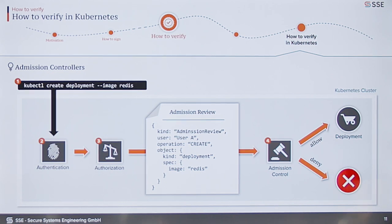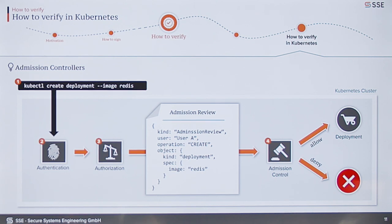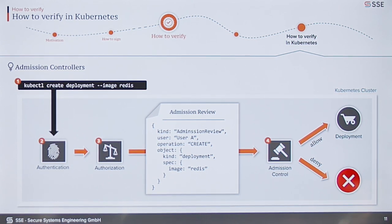Now the question is: how do we actually verify inside of Kubernetes? We know how to verify with Cosign and with Notary, but we don't know how to tell Kubernetes to do all these things for us. So every time we want to create any kind of resource — deployment, stateful set, daemon set, whatever — Kubernetes ideally should do all these verifications for us and we don't have to worry about anything. We can do this with admission controllers.